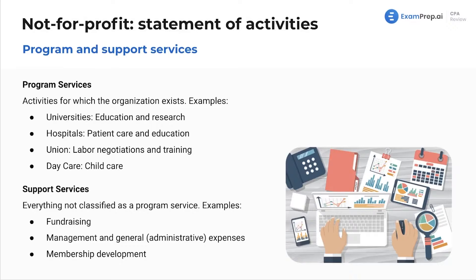If I have a service where it is core to its activity, that's a program service. For a university, what do we do? We educate and research. For hospitals, we do patient care and medical education. For unions, we negotiate labor wages, training, hours, and salary. For child daycare, we take care of the kids. So if you have costs that are related to these, those are program services.